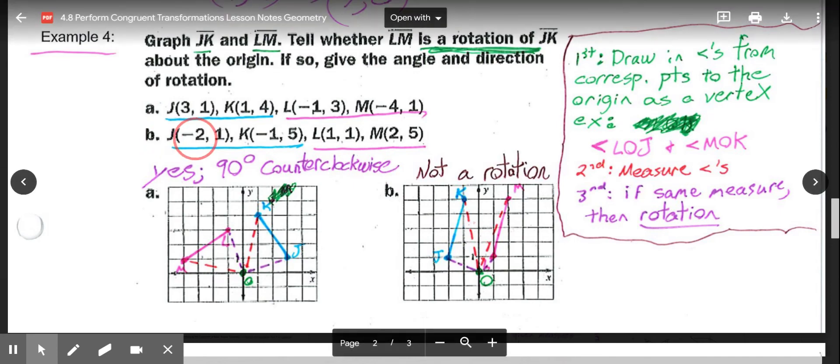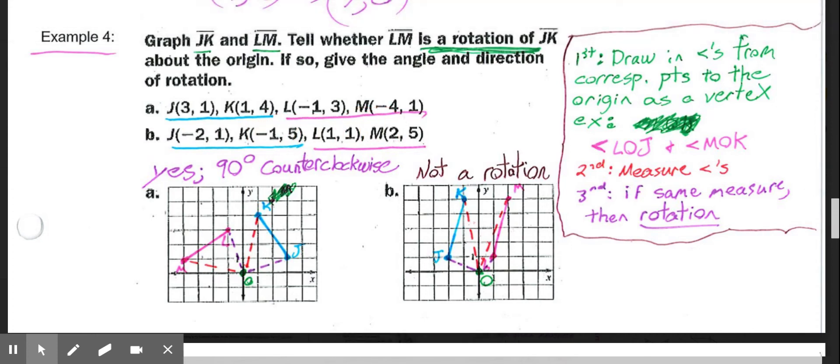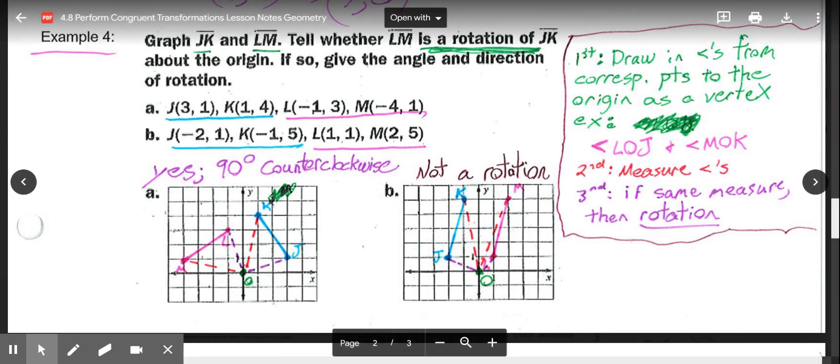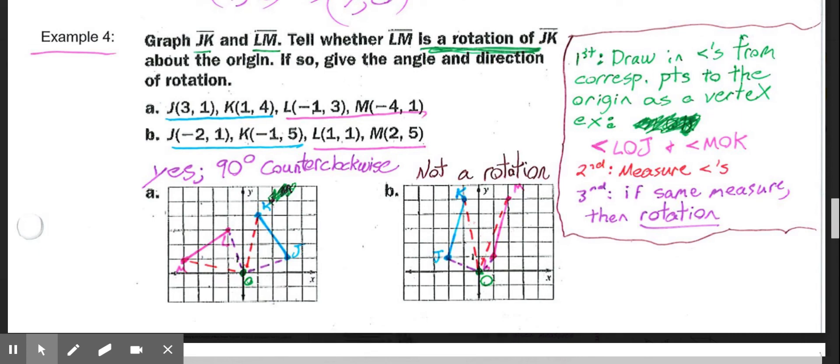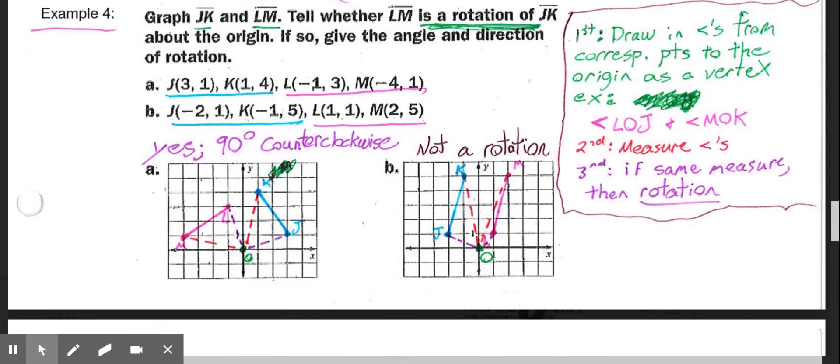In part B, again, you want to first plot JK and LM to get your segments. Then we would want to draw in the angles: angle LOJ, connecting O to J and O to L, and then MOK, connecting O to M and O to K. If we measure those two angles, they are different measures. So that tells us this is not a rotation. Instead, this shape just slid over. So that would be a translation or a slide.